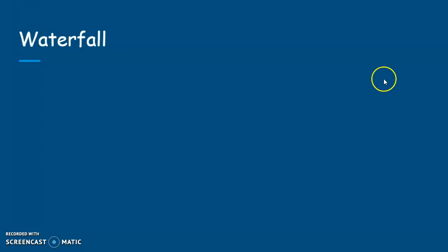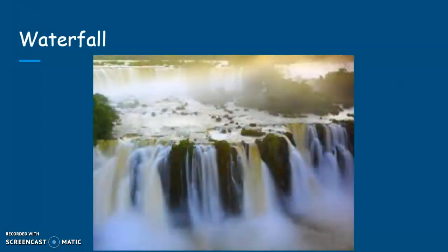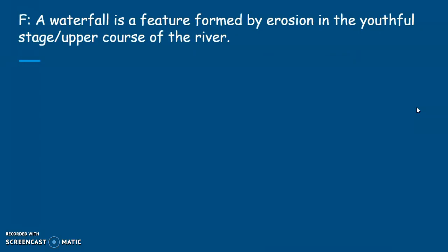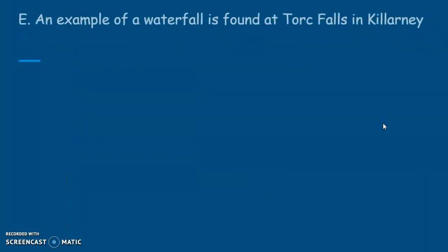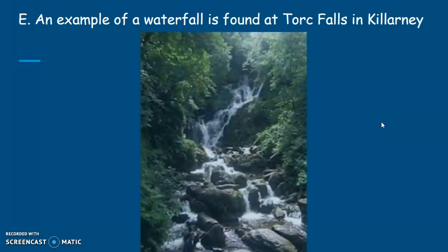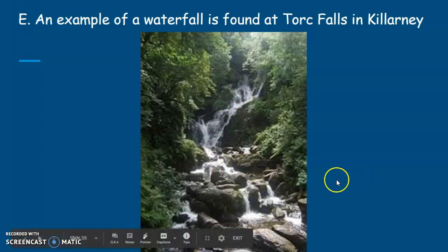Now we're going to use the waterfall for our F-E-E-D feature: Feature, Example, Explanation, and Diagram. I'm going to show you how to do the diagram in another video. For our feature: a waterfall is a feature formed by erosion in the youthful stage or upper course of the river. An example of a waterfall is found at Torc Falls in Killarney — a lovely example of a retreating waterfall.